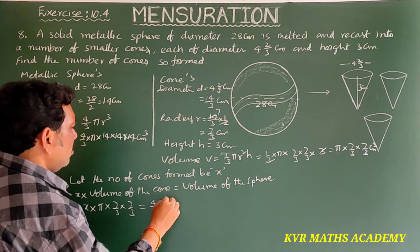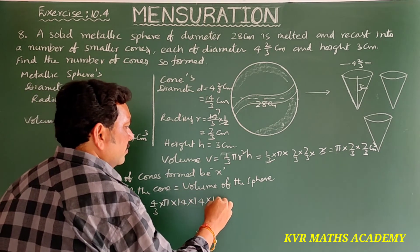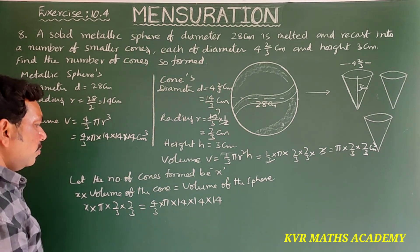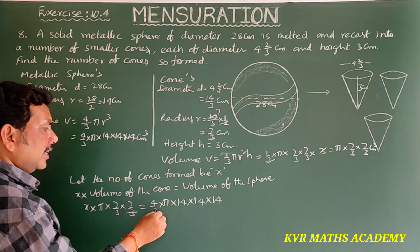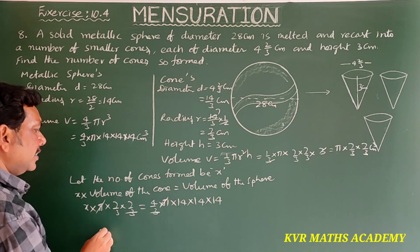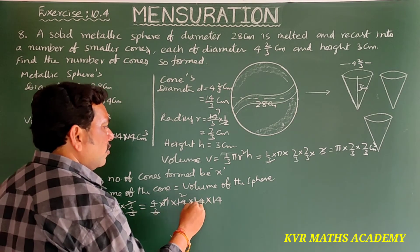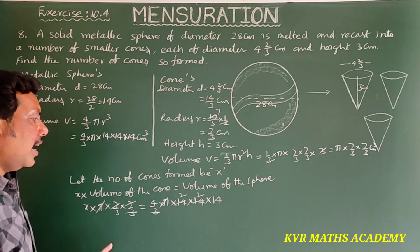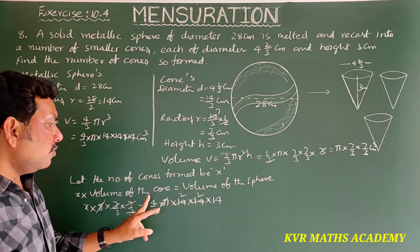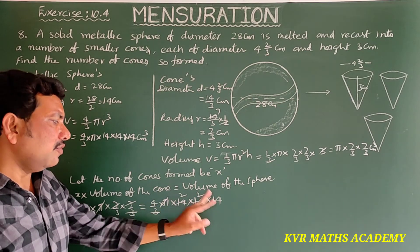So x × π × (7/3)² = 4/3 × π × 14 × 14 × 14. On both sides, 3 and π cancel. Then 7 divides into 14 two times, and again 7 divides into 14 two times. That gives 2 × 2 = 4, and 4 × 4 = 16. So x = 16 × 14.